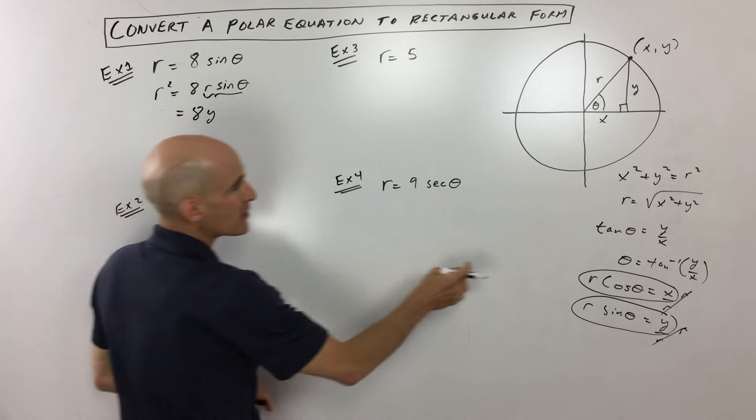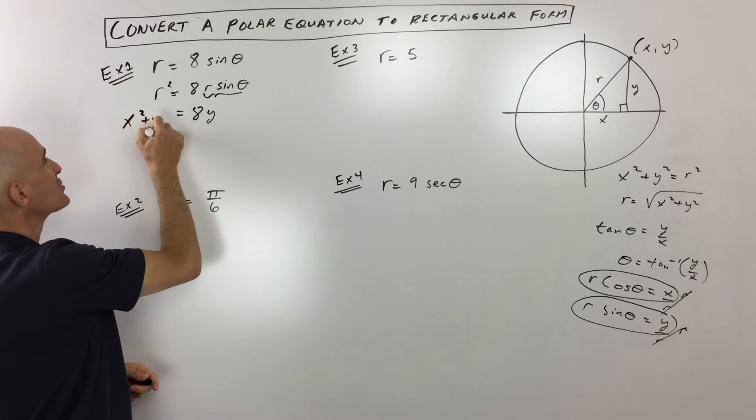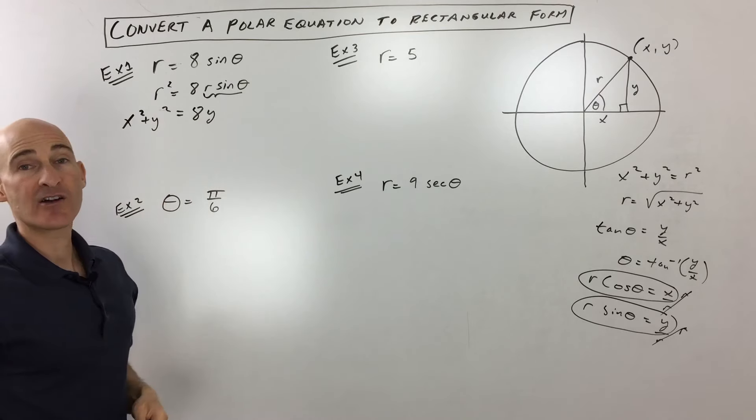And we also know that r squared is equal to x squared plus y squared, so let's do that substitution as well. So now when we get to this form, we've got the x's and y's, we've gotten rid of the r's and the thetas.